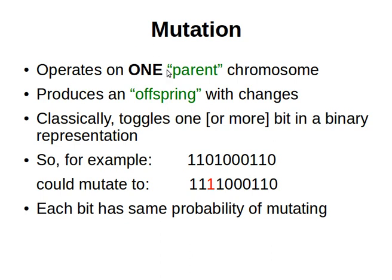The next operator is mutation. Mutation operates on only one parent chromosome and produces an offspring with some changes. The idea is we toggle one or more bits in a binary representation. We randomly choose one of these bits and flip it from zero to one or from one to zero. Each bit has the same probability of mutating. This gives us another solution — the solution changes position in the search space.